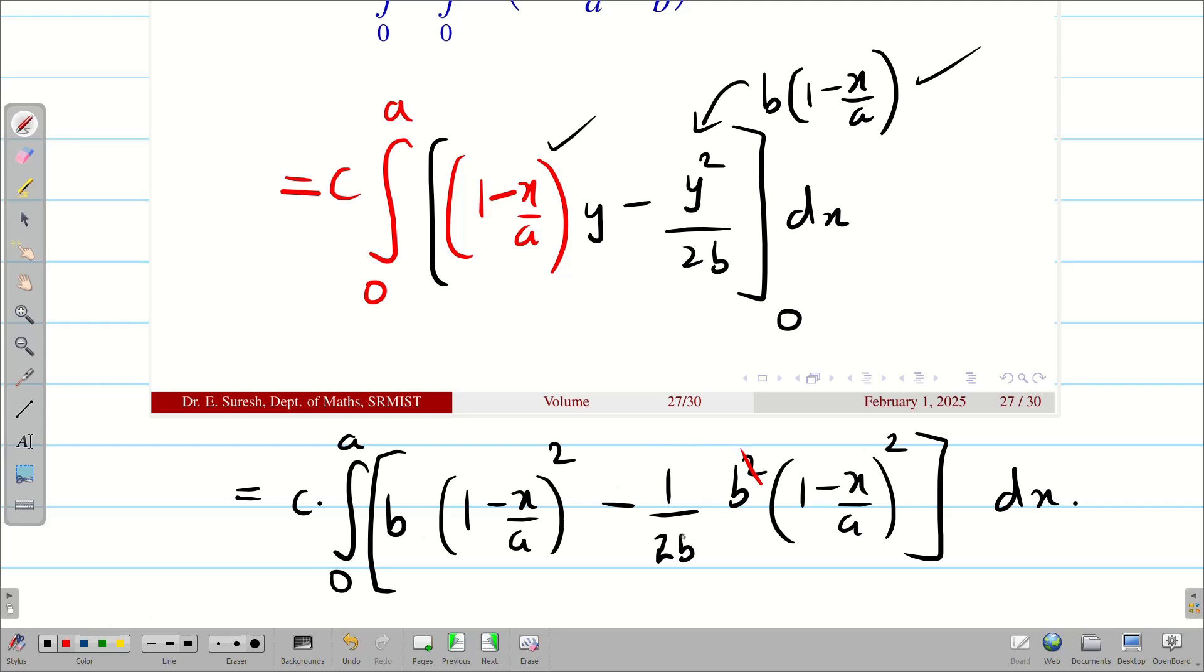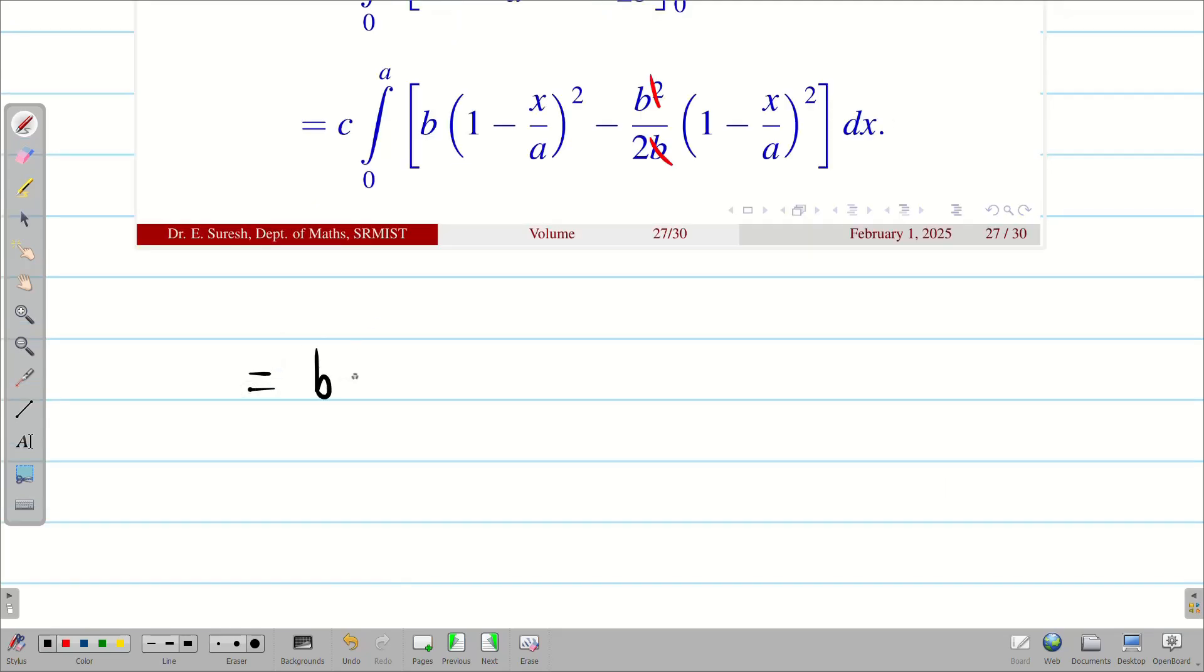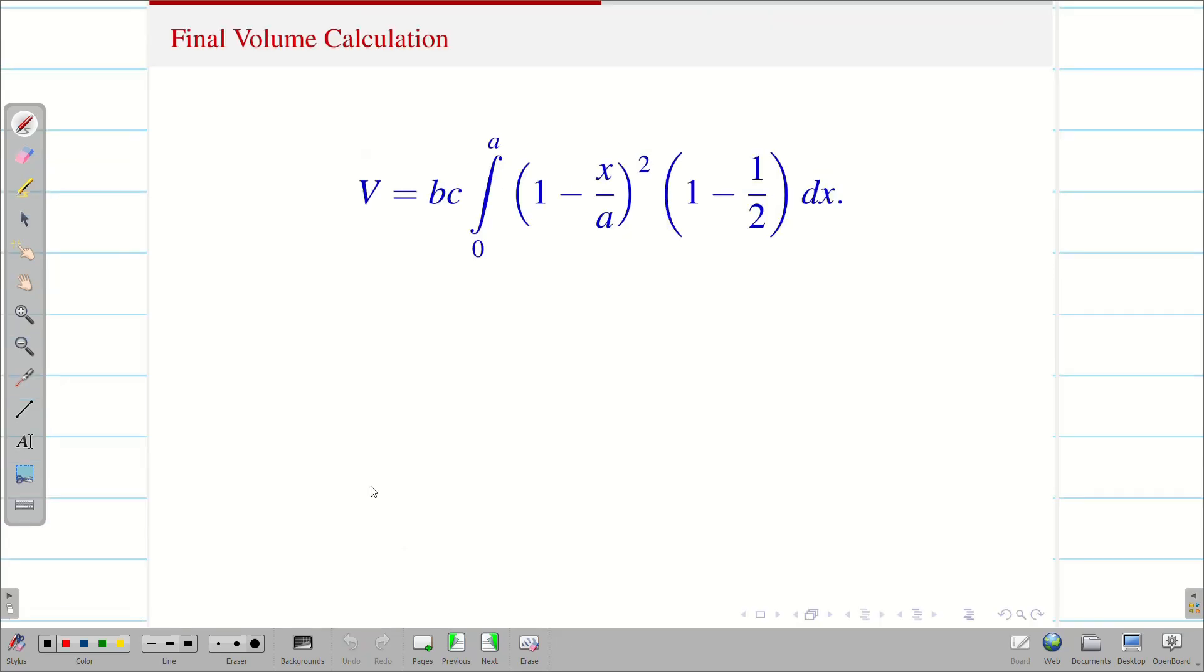So bc integral over 0 to a. You can see in both terms, (1 minus x by a) whole square is going to be the same. So I will take this out - (1 minus x by a) whole square. You should not take this outside the integral, I am taking it in common. So we get (1 minus 1 by 2) dx. Therefore, 1 minus 1 by 2 is 1 by 2. Now, better expanding this and we can easily integrate. (1 plus x square by a square minus 2x by a) dx.